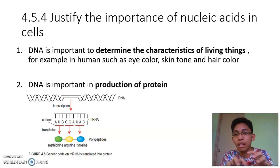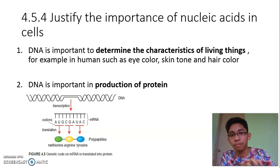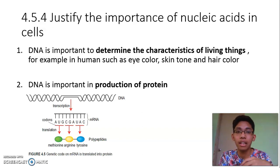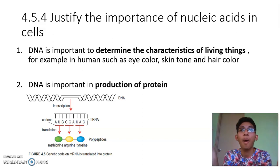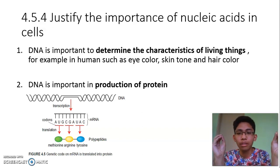These amino acids are arranged in a sequence to form polypeptides, which are proteins. This protein is used to determine the characteristics of the living thing. So DNA is like instructions — it has codes, and those codes will be converted into RNA.